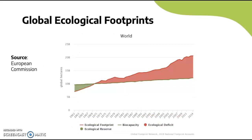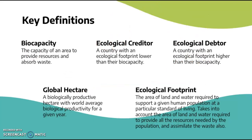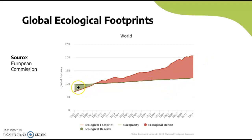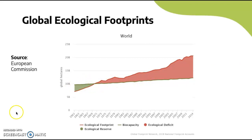Finally, looking at the global ecological footprint: since around 1970, the world has gone into an ecological deficit, becoming an ecological debtor. Before that, there was an ecological reserve — resources weren't being overused. Since then, the deficit has increased, which is very dangerous for the climate and global resources. The red line showing the ecological footprint has increased hugely; biocapacity is relatively stable but slightly increasing.